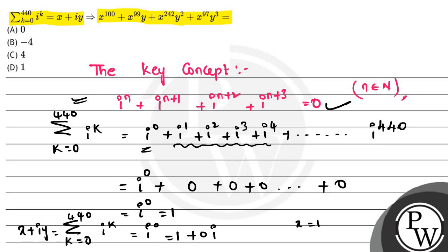When we find x^100 + x^99*y + x^242*y^2 + x^97*y^3, the terms with y become 0, leaving x^100 = 1^100 = 1. So option D is the correct answer. Thank you.